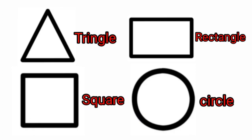Students, today we learnt about different types of shapes and their corners and sides, which includes a triangle, a rectangle, a square, and a circle.